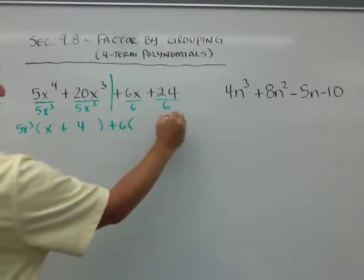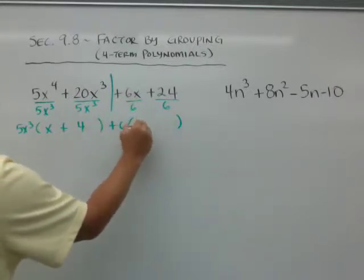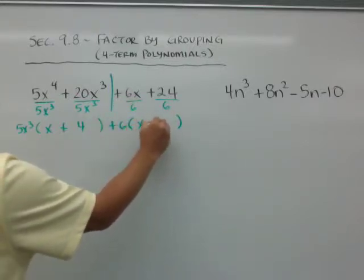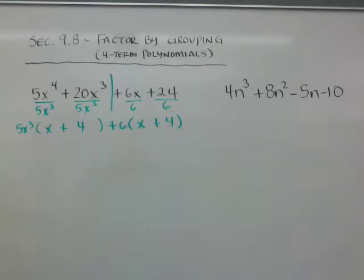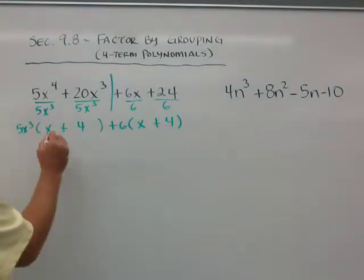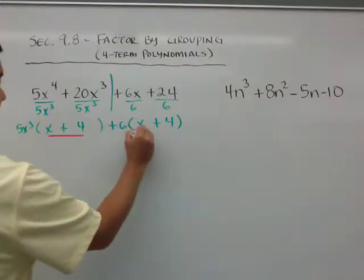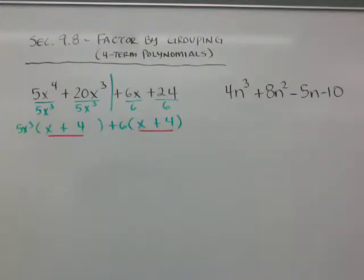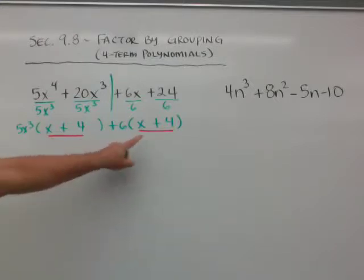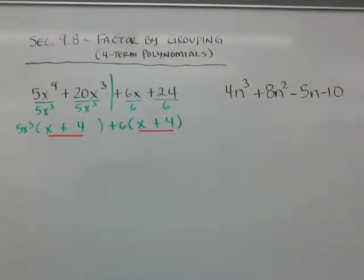I'm left with — if I divide this, I get an x, and if I divide this, I get a 4. And if you notice, whatever is in the parentheses is the same. And for this chapter, when you start factoring this out, this needs to be the same. If the inside of the parentheses are not the same, you did something wrong.